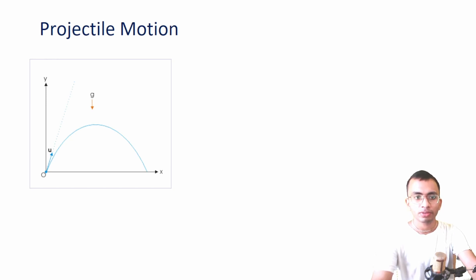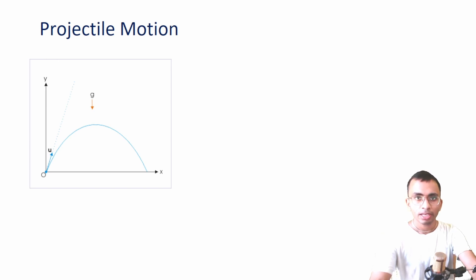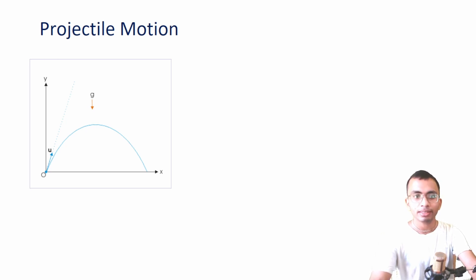In this video, we will discuss some derivations and concepts of standard projectile motions and we will also discuss how to solve questions on this. We know that the x-axis and y-axis are perpendicular to each other. Therefore, the motion along the x-axis is independent of the motion along the y-axis. So we can separately analyze the motion along the x-axis and y-axis.